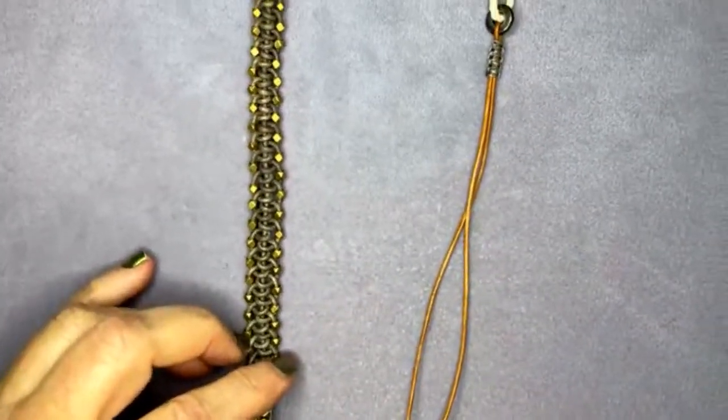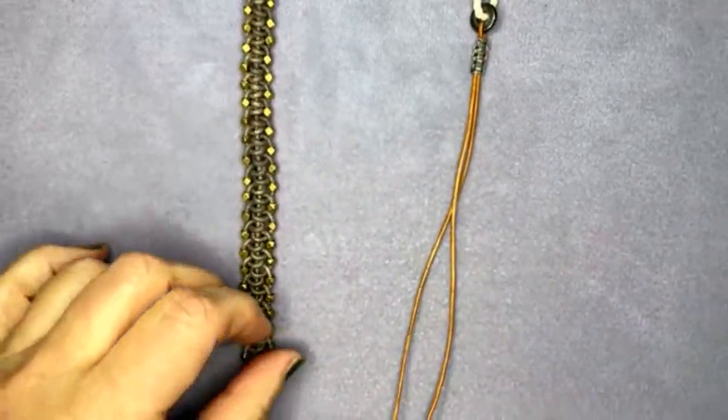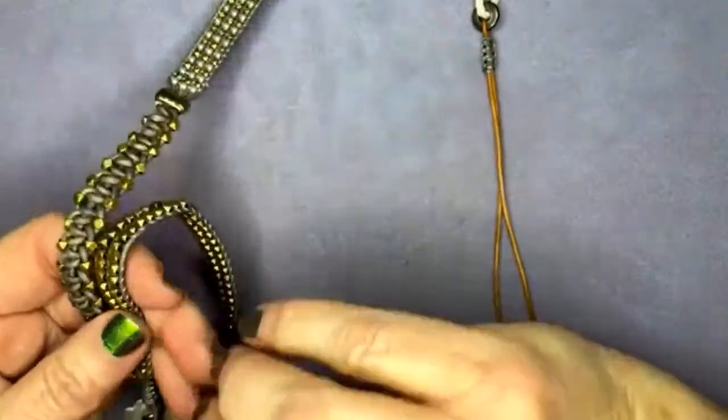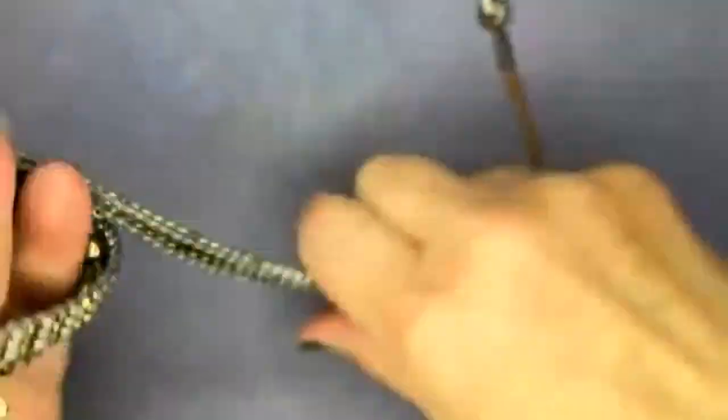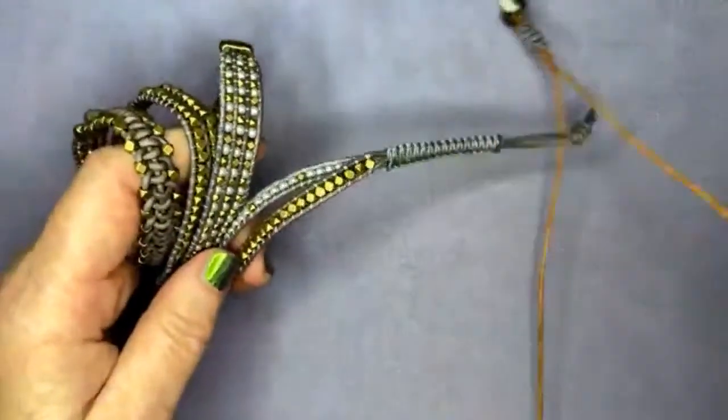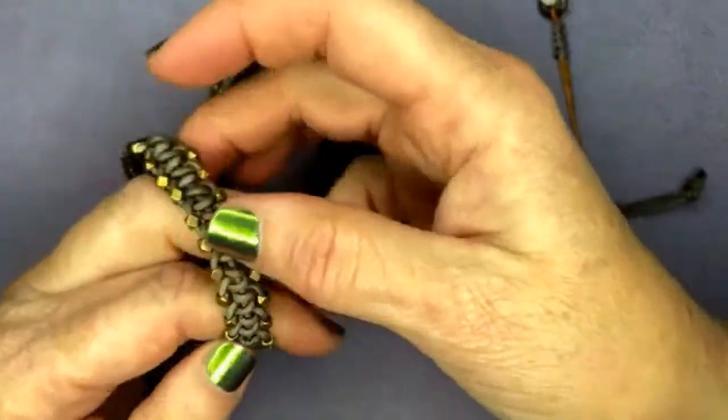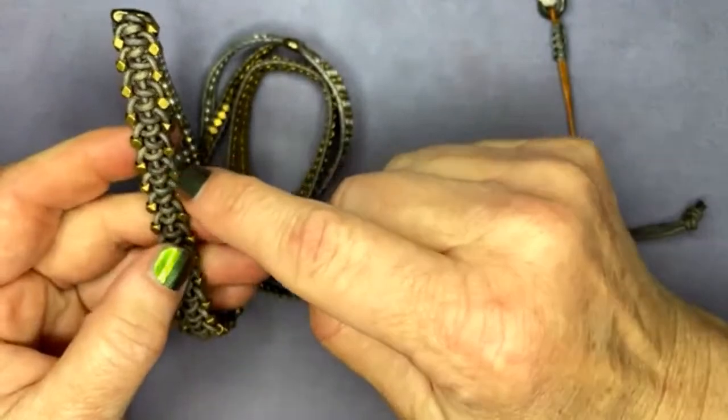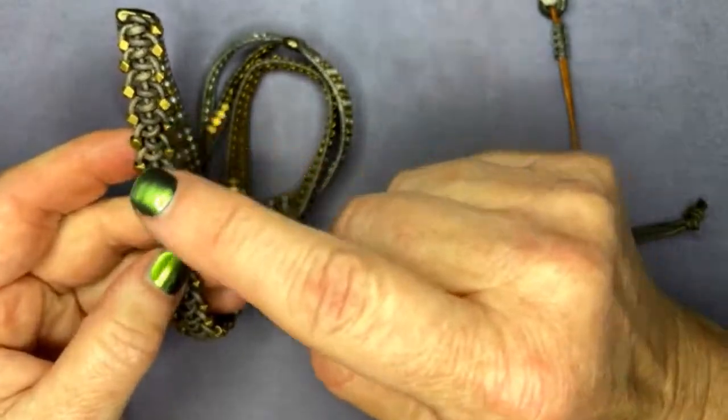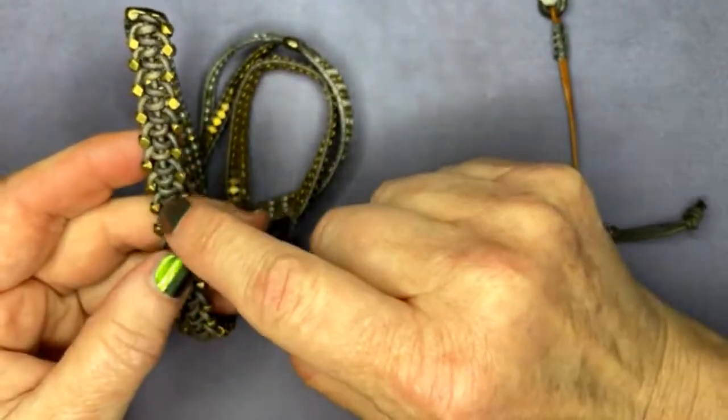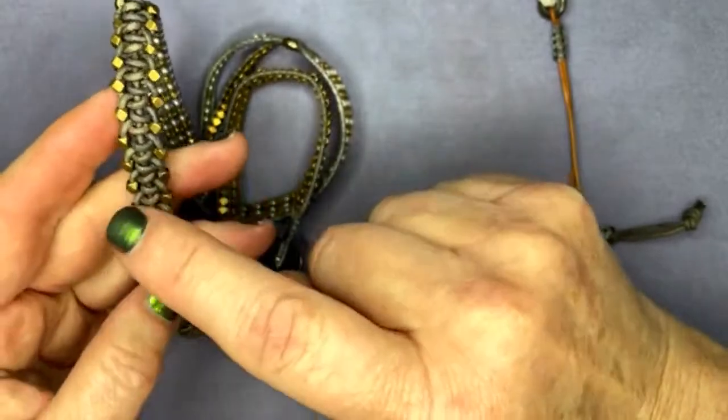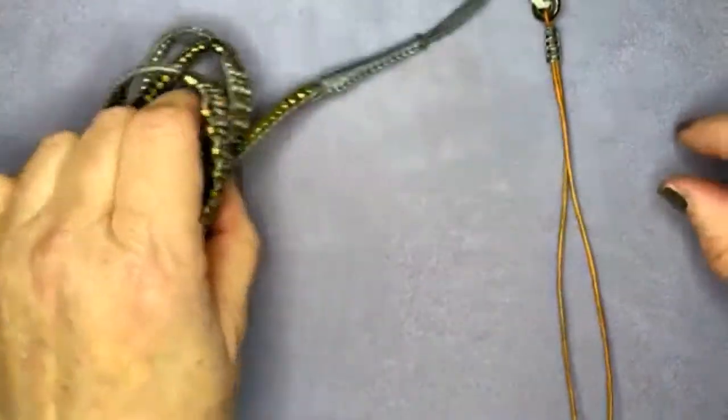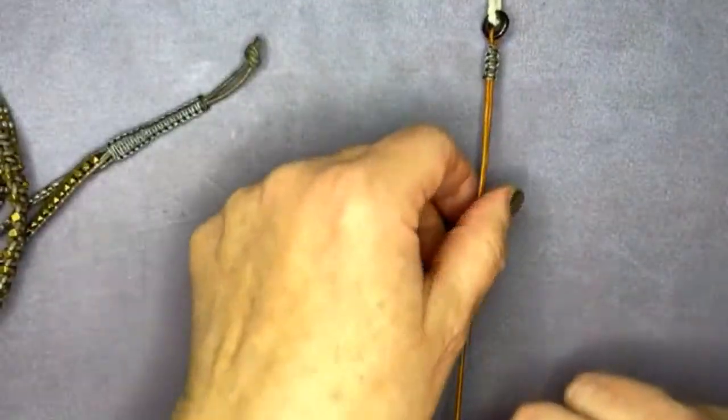When I did the redo knot or the redo wrap bracelet where I incorporated some techniques from my Kate's favorite, and then I also did this knotted section right here. And you'll remember this section from other bracelets, but they didn't have the beaded section.